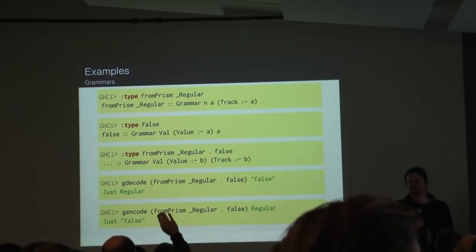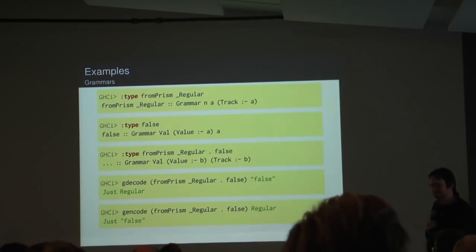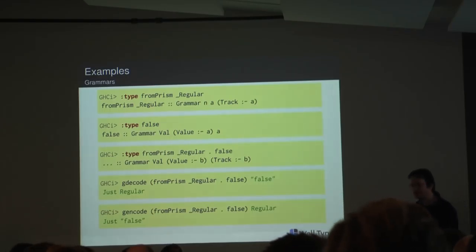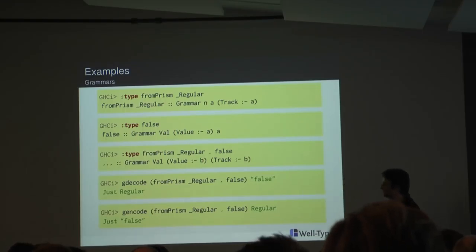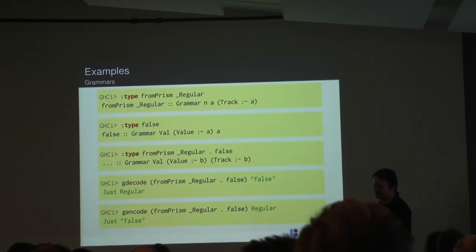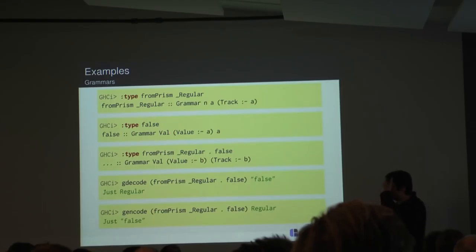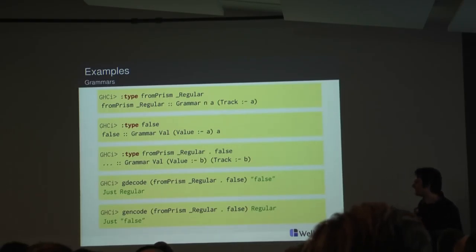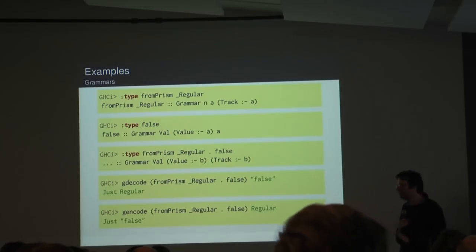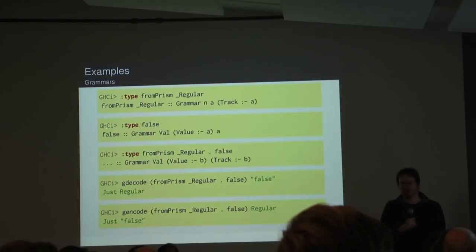Question: Is it possible to extend to other error types? That's a weakness of this particular library — you're returning Maybe always. But Aeson itself has become significantly better in terms of error messages in recent versions, and it's possible to propagate better error messages. There's no theoretical problem that would prevent error messages from being supported.